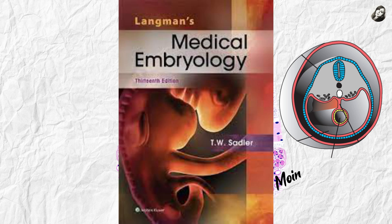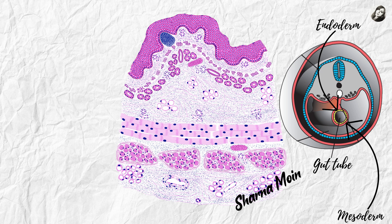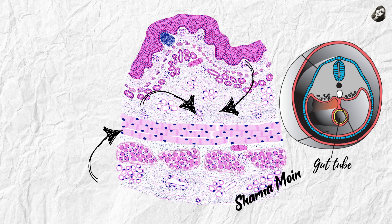This figure shows the gut tube. The yellow portion represents the endoderm and the red color represents the mesoderm. The lining epithelium and the cells of the esophageal glands are derived from the yellow portion — the endoderm. The rest of the esophagus — the muscles, connective tissue, vessels, and supporting structures of the esophageal glands — are derived from the surrounding red structure, the mesoderm.